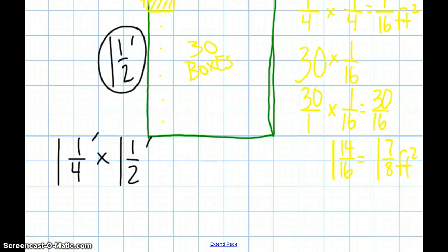Well, the first thing I want to do is change them into improper fractions. So, 4 times 1 is 4, plus 1 is 5, so that's 5 fourths, times 2 times 1 is 2, plus 1 is 3. That is 3 halves.